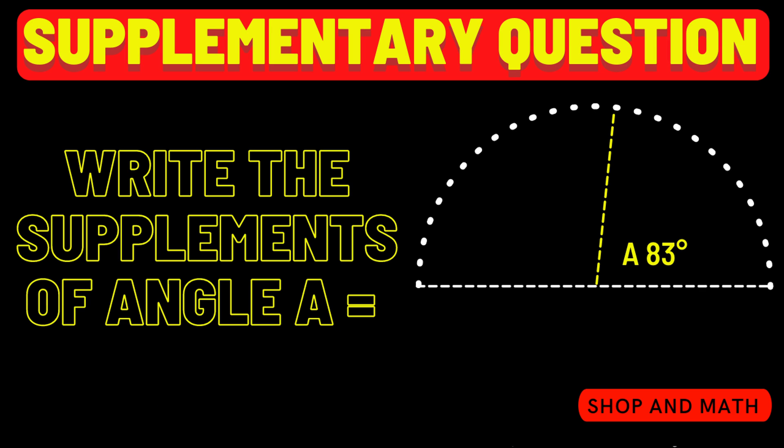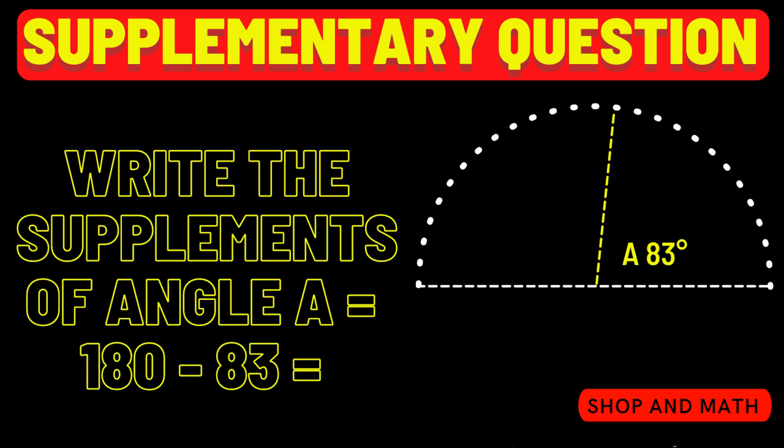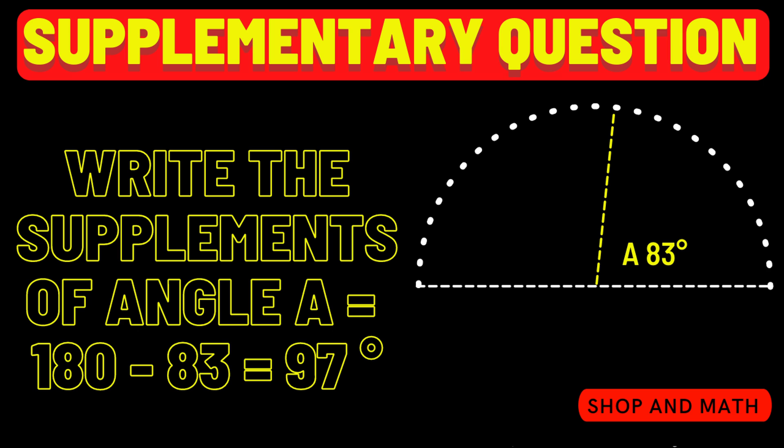Here's an example of a supplementary question that you might get on a test. They're saying you have an 83 degree angle — what is the supplementary angle to 83 degrees? So 180 minus 83 would be 97 degrees.